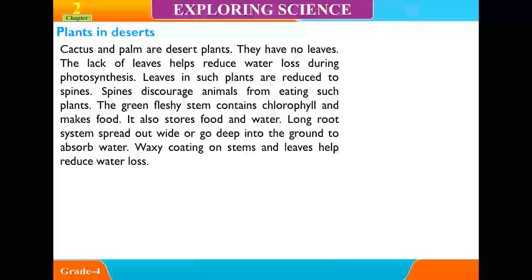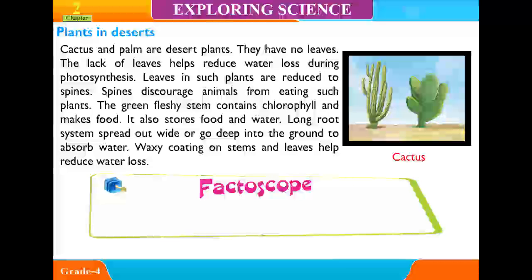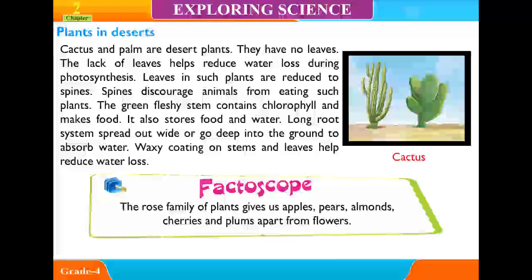Plants in Desert. Cactus and palm are desert plants. They have no leaves. The lack of leaves helps reduce water loss during photosynthesis. Leaves in such plants are reduced to spines. Spines discourage animals from eating the plants. The green fleshy stem contains chlorophyll and makes food. It also stores water. Long root systems spread out wide or go deep into the ground to absorb water.